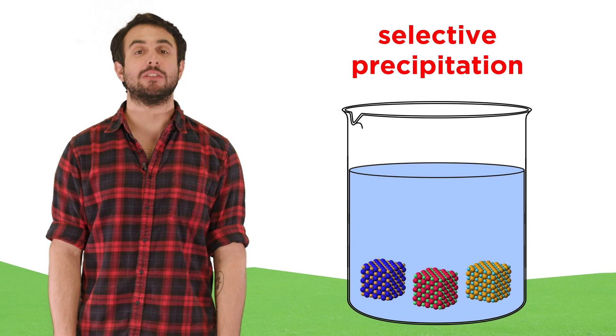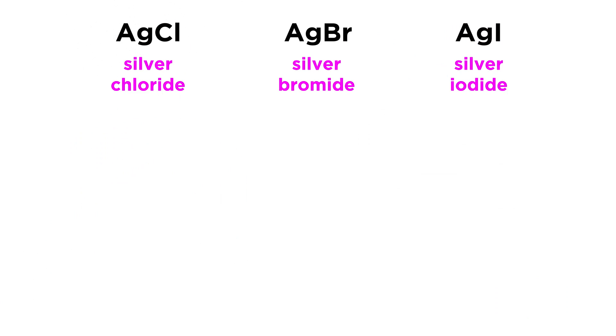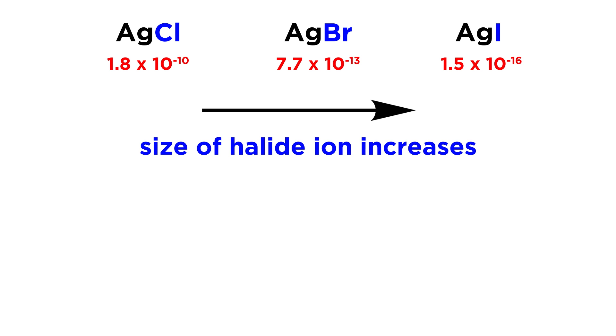Let's learn what this means by looking at an example. The silver halides, like silver chloride, silver bromide, and silver iodide, are compounds that are quite water insoluble, and from these diminishing KSP values, we can see that as the size of the ion increases, from chloride to bromide to iodide, the solubility of the silver halide decreases.